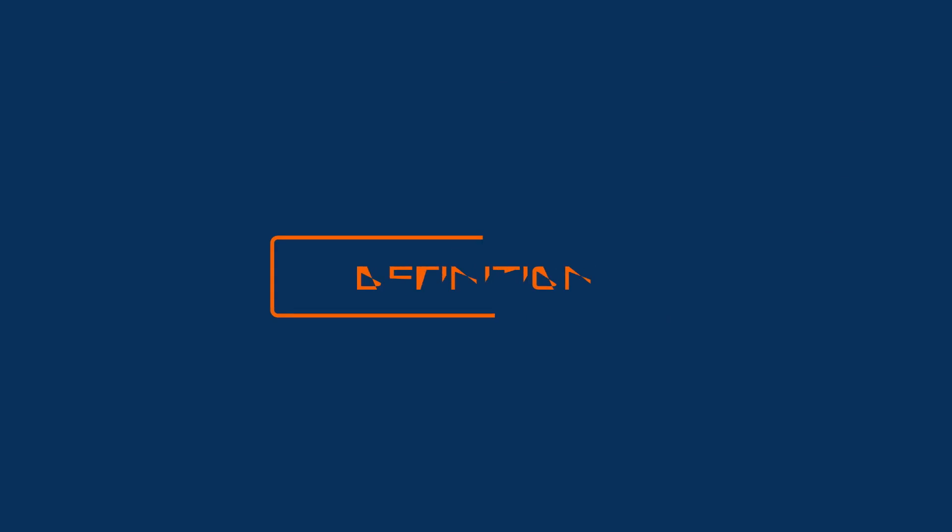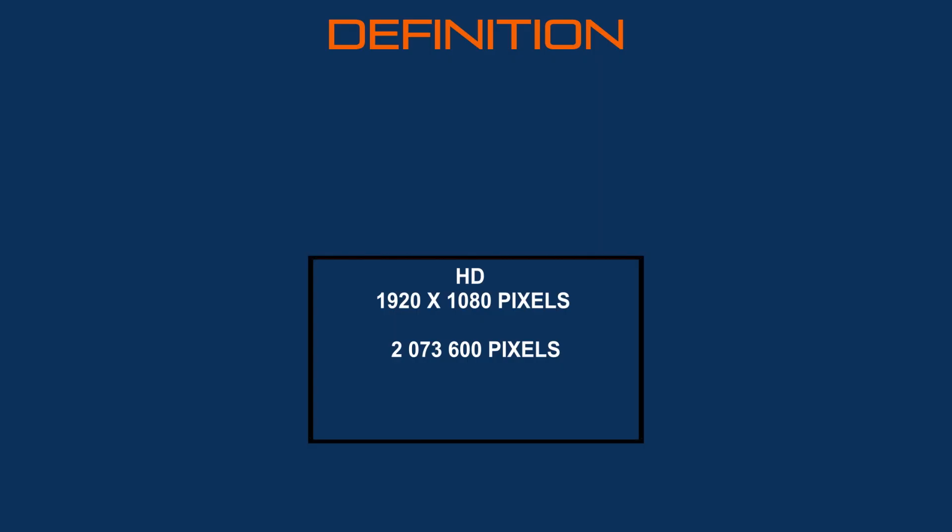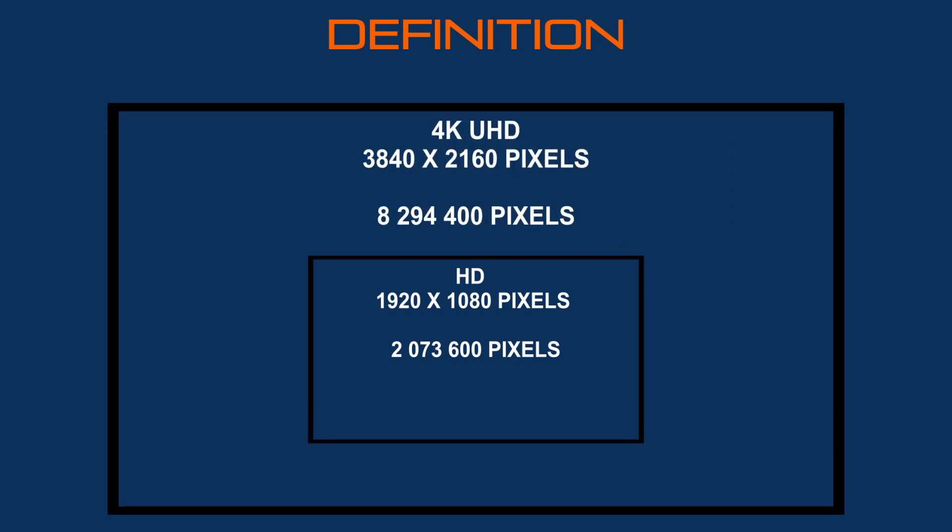Now let's talk about definition and the size of an image. The size of an image is measured in pixels — we talk about definition, not resolution. The definition of a picture is its height by its width. An HD picture is 1920 by 1080 pixels. A 4K UHD picture is 3840 by 2160 pixels. The 4K format allows you to have a better definition on a larger screen.